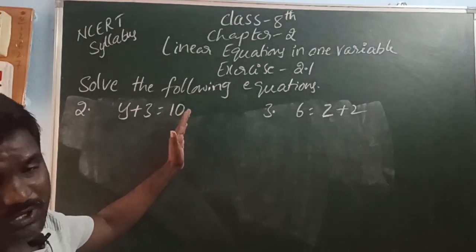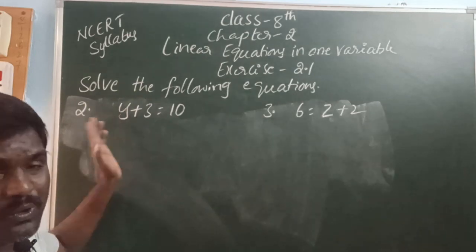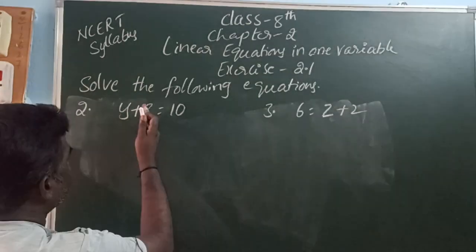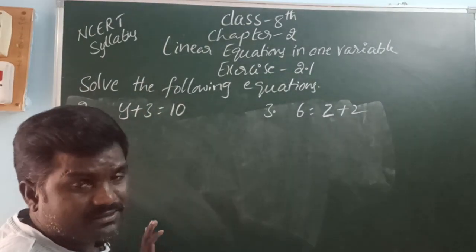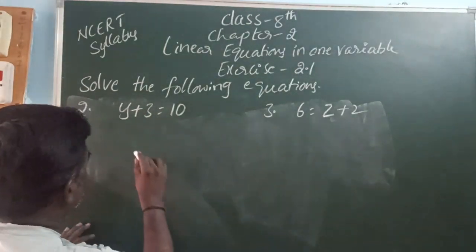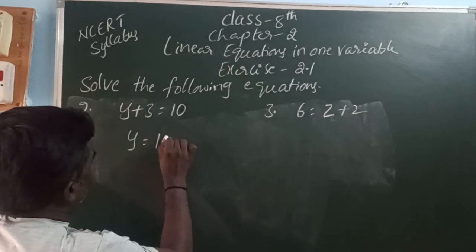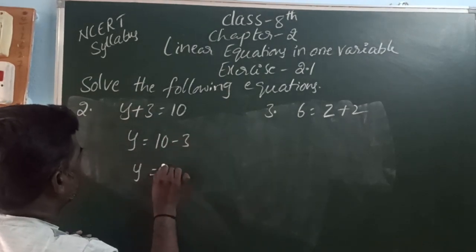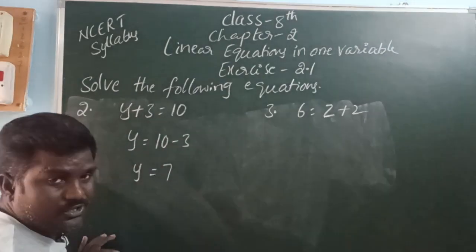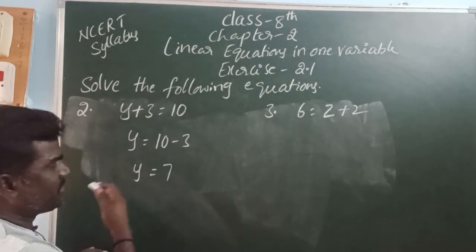y plus 3 is equal to 10. What is the unknown thing here? Y. So, plus 3 is moving to the right side and it becomes minus. So y is equal to 10 minus 3. That is, y is equal to 7. So the value of variable is 7.